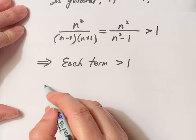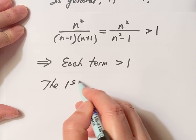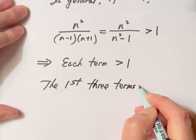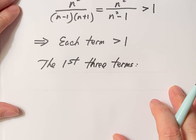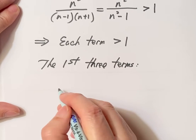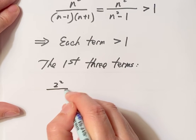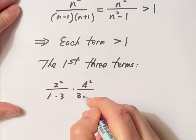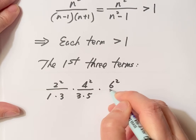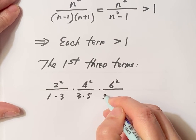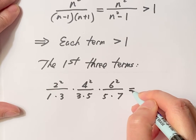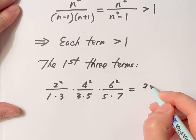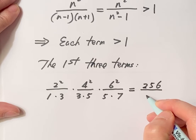We only consider the first three terms: 2 squared over 1 times 3, 4 squared over 3 times 5, 6 squared over 5 times 7. It's easy to calculate this number which is 256 over 175.